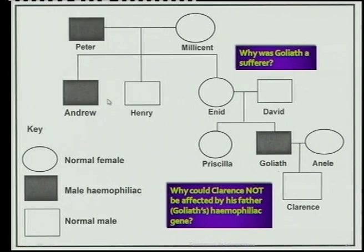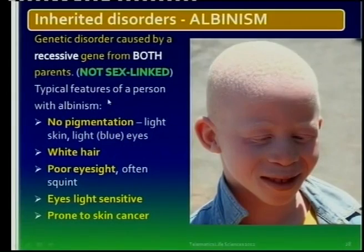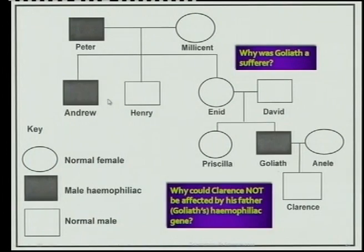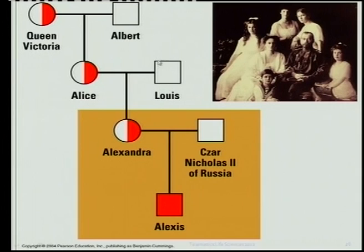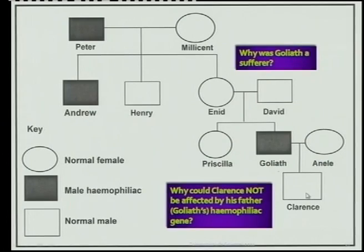Just so that they can see — these are the females as represented by circles, and the carrier, of course, they will give you the key. And males by the square boxes. And you must know that too.